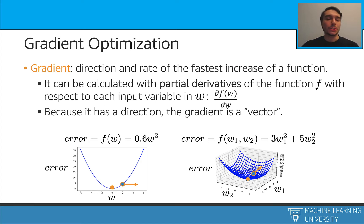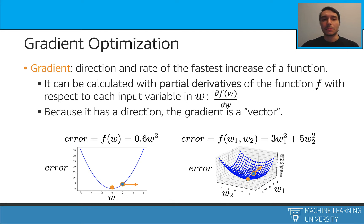When I am trying to find this minimum, I can use some tools. Here we are going to use something called gradient. In the gradient optimization, we are going to calculate the gradient value, which tells us the direction and the rate of the fastest increase in the function. We calculate this by taking the partial derivative of our cost function with respect to the input. Gradients have a direction and a value, so we can also call them vectors.